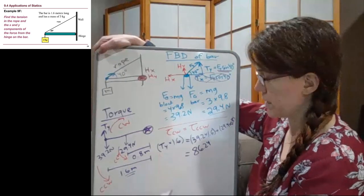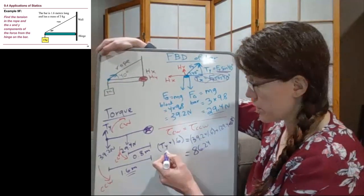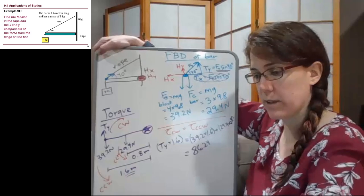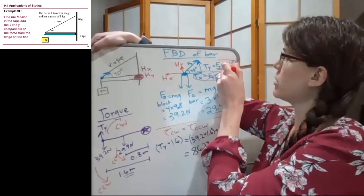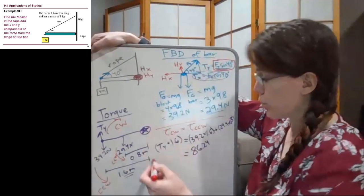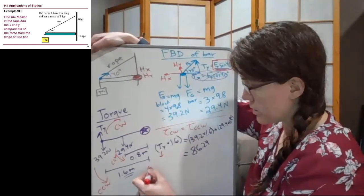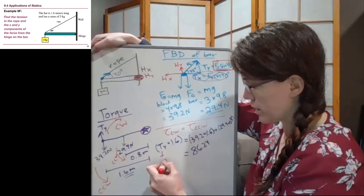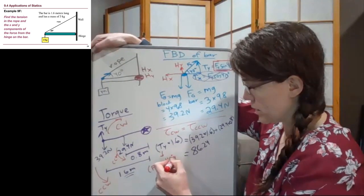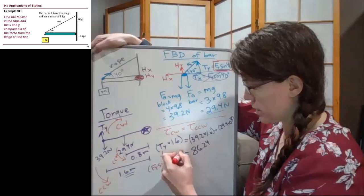The other thing I'm going to do, writing down the next step, is the y component of tension, and let me use red to really highlight it here. The y component of tension, we can rewrite as the full tension times the sine of 40 degrees, times 1.6.